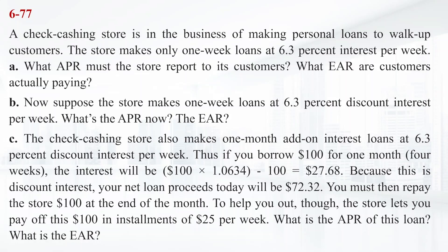A check-cashing store is in the business of making personal loans to walk-up customers. The store makes only one-week loans at 6.3 percent interest per week. What APR must the store report to its customers? What EAR are customers actually paying? Now suppose the store makes one-week loans at 6.3 percent discount interest per week. What's the APR now? The EAR?